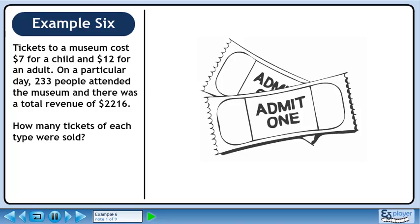Tickets to a museum cost $7 for a child and $12 for an adult. On a particular day, 233 people attended the museum and there was a total revenue of $2,216. How many tickets of each type were sold?